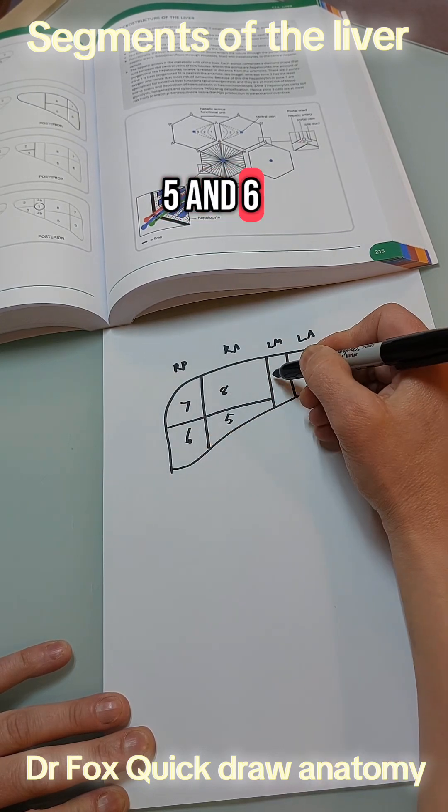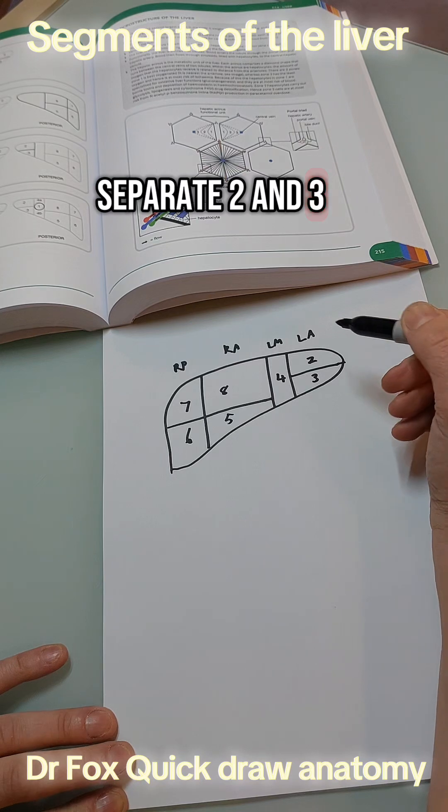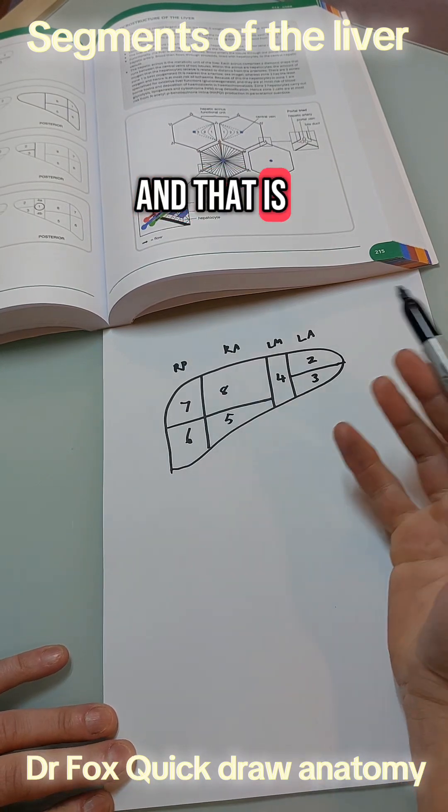five and six and then that leaves us four and then one more line to separate two and three and that is the anterior side.